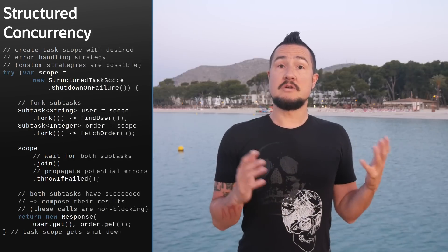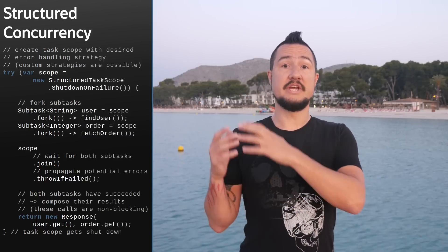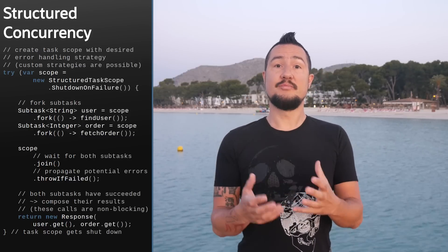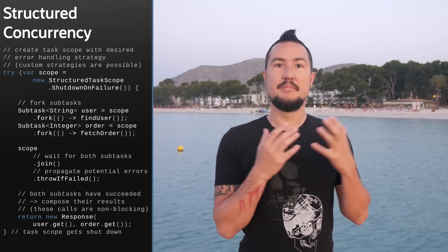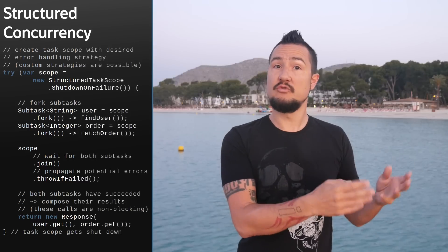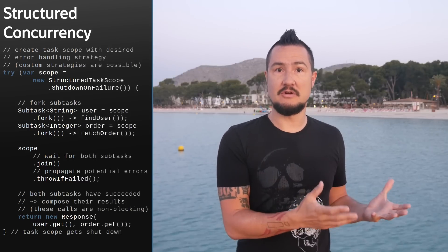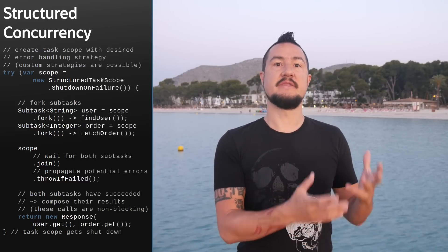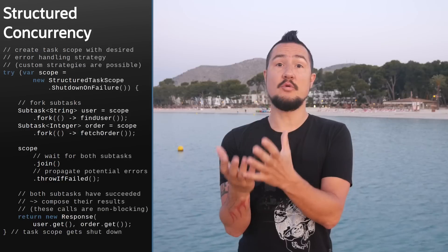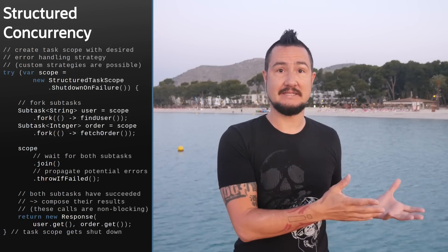If you haven't seen this coming a mile away — for one, you're not reading the title cards, but you must also have skipped quite a few of our videos. The Structured Concurrency API was incubating in JDK 20 and is upgraded to a preview in JDK 21. Beyond moving to a proper package, namely java.util.concurrent, the only change has been that StructuredTaskScope's method fork() now returns the type Subtask.